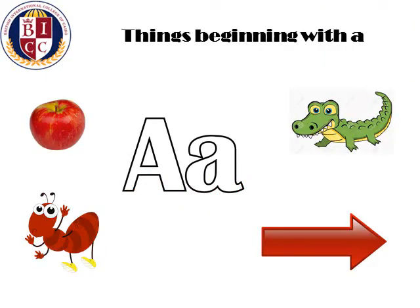Things beginning with A. Can you have a look at the pictures and see if you can guess what they are? A for apple. A for ant. A for alligator. A for arrow. Excellent job.